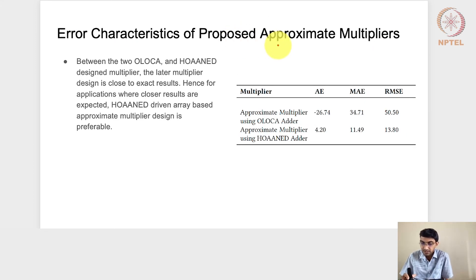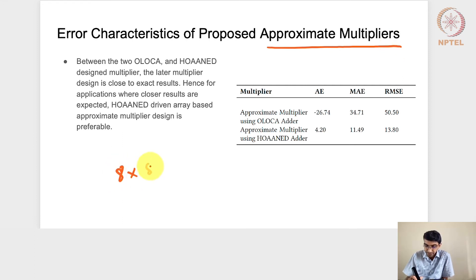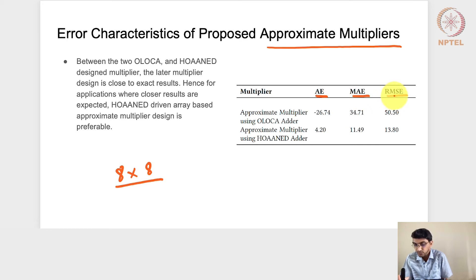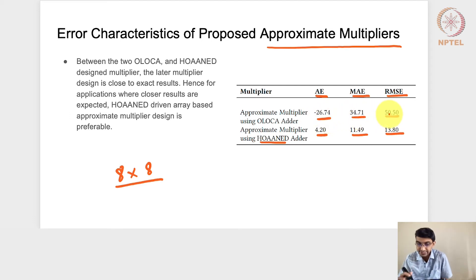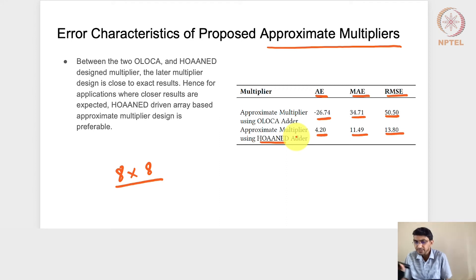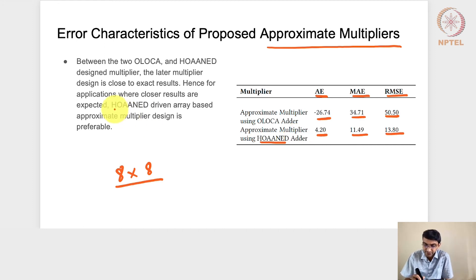Using these two approximate adders in an 8x8 bit multiplier, we get approximate multipliers. In terms of absolute error, mean absolute error, and root mean square error, the HOANED-based multiplier gives lower error values compared to the OLOCA-based one. This is expected because in HOANED, the most significant bit of the inaccurate part produces more accurate results than in OLOCA, where only OR gates were used.